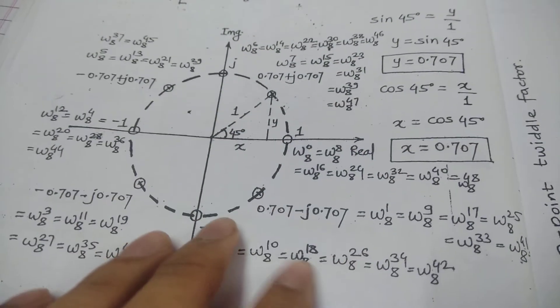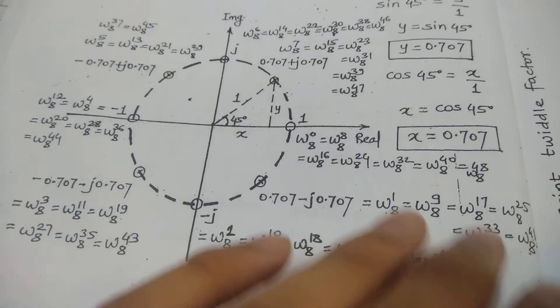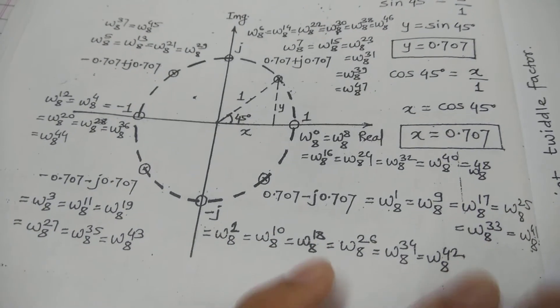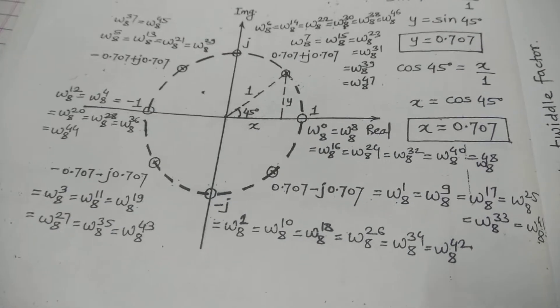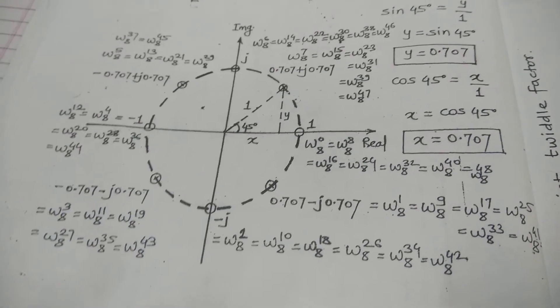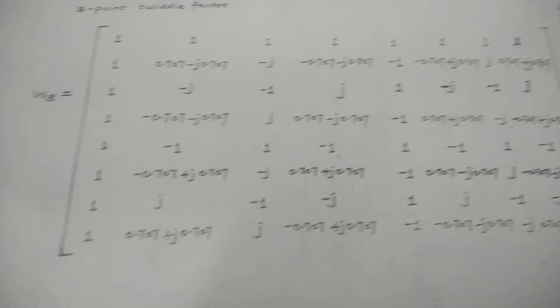After having all these things calculated, like the previous videos—go check that out for twiddle factor 4 and twiddle factor 6—after understanding that, twiddle factor 8 will be easy. Finally, after placing all the values, you will have your twiddle factor 8, that is W8.